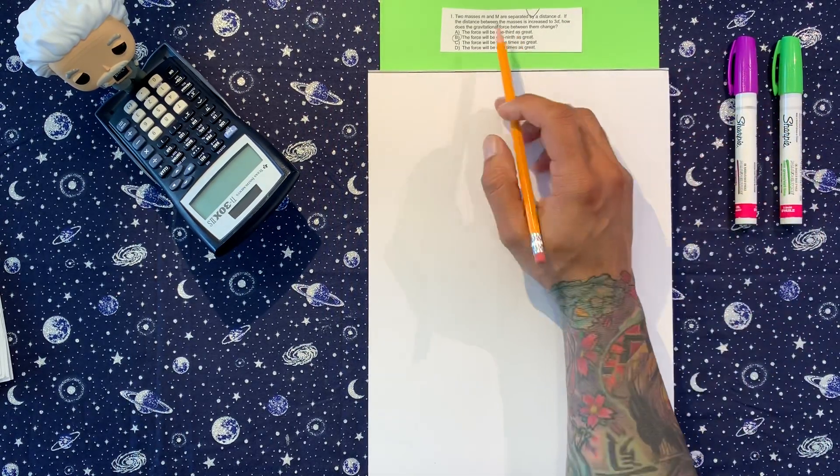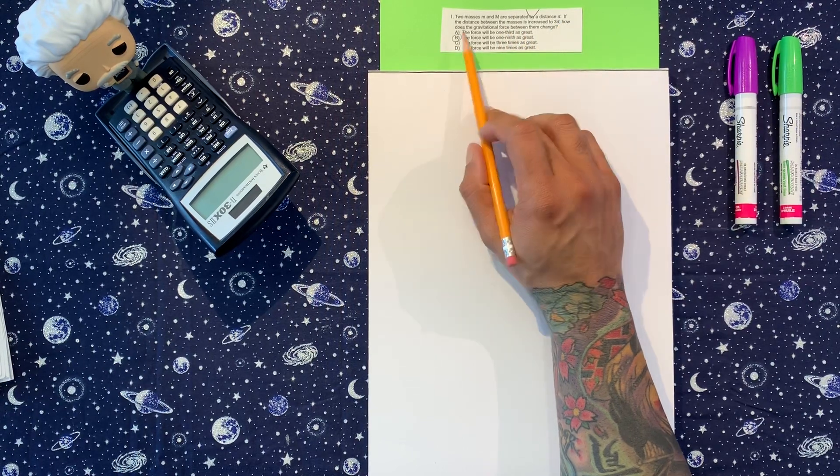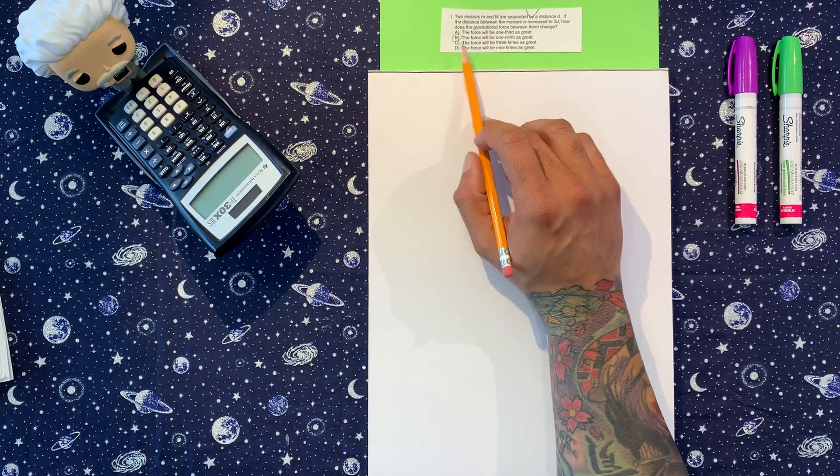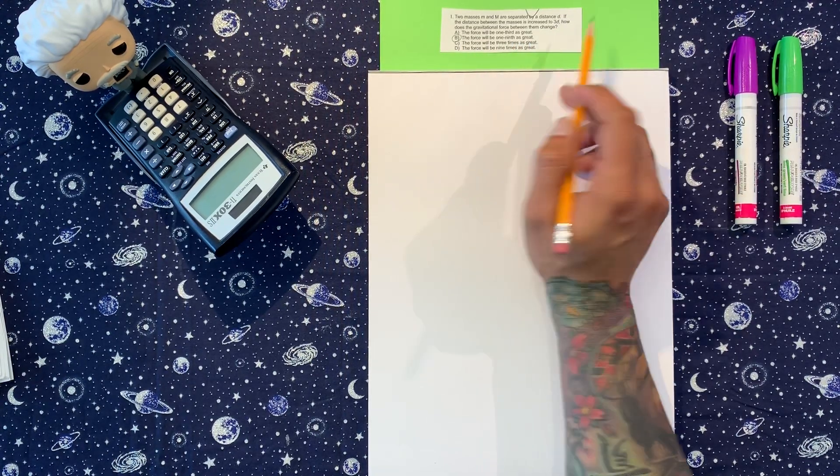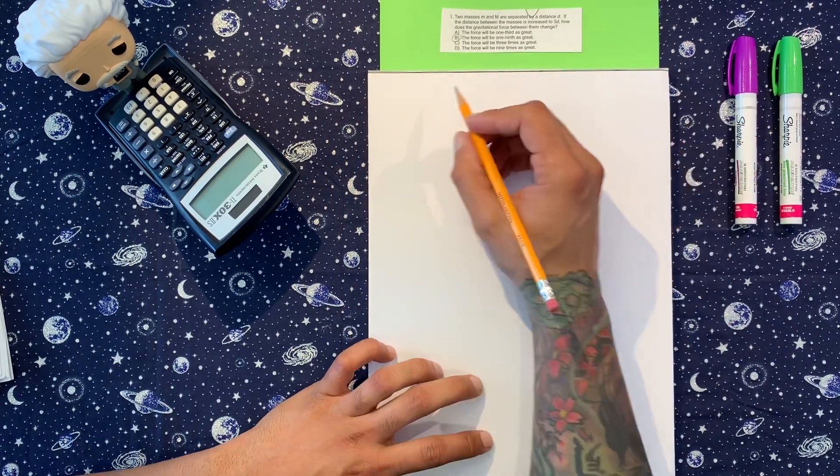We got two masses, little m, big m, separated by a distance d. If the distance between the masses is increased to 3d, how does the gravitational force between them change?